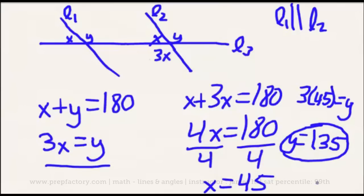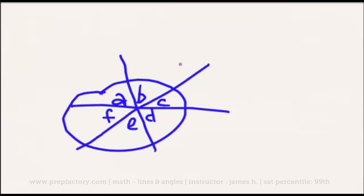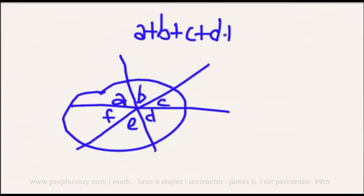Let's look at one more thing before moving on to polygons — questions involving a bunch of lines that all meet at a central point. There's really only one important thing to remember: any set of angles around a central point, around which you could make a circle, must add up to 360 degrees. Just as any set of angles on one side of a single line must equal 180, all angles taken together around a central point must add up to 360.